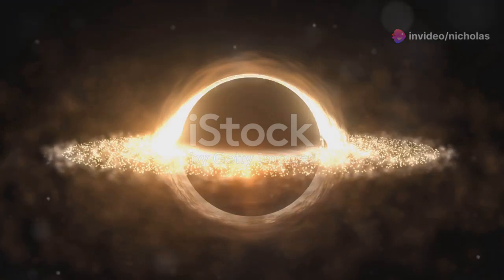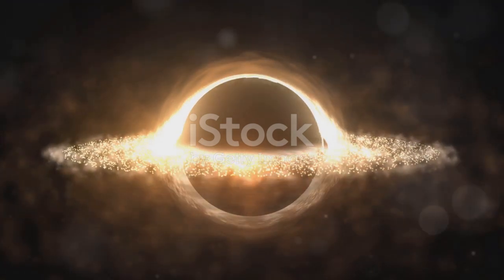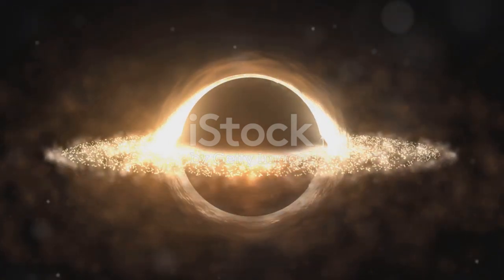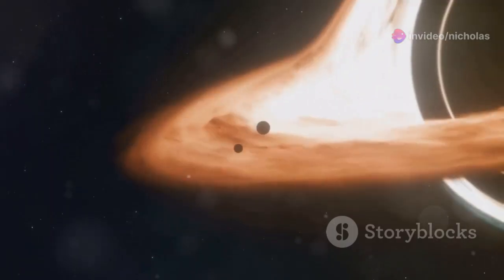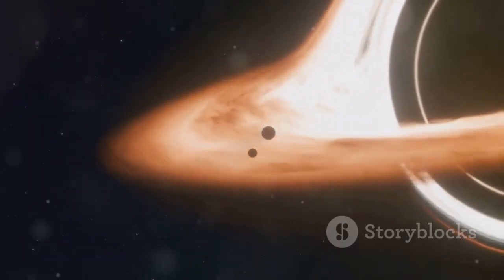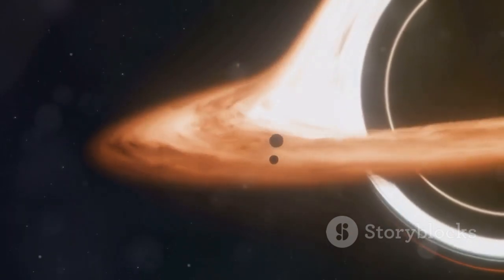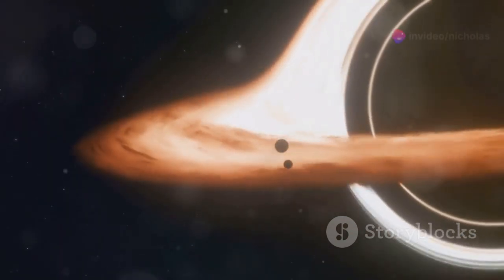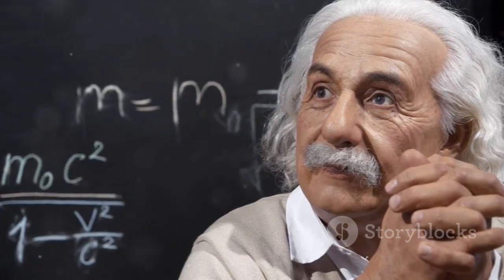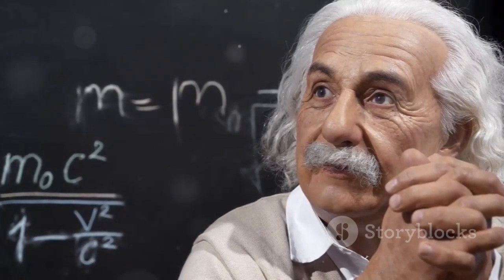At the heart of every black hole lies a singularity, a point of infinite density where the laws of physics as we know them break down. Imagine all the matter of a star, or even an entire galaxy, crushed into an infinitely small point. That's the singularity. We can't see the singularity directly, as it's hidden behind the event horizon. But we know it must be there based on our understanding of gravity. The singularity is a place of extremes, where gravity is infinitely strong and space-time is infinitely curved. It's a place where our current understanding of physics simply can't explain what's going on.